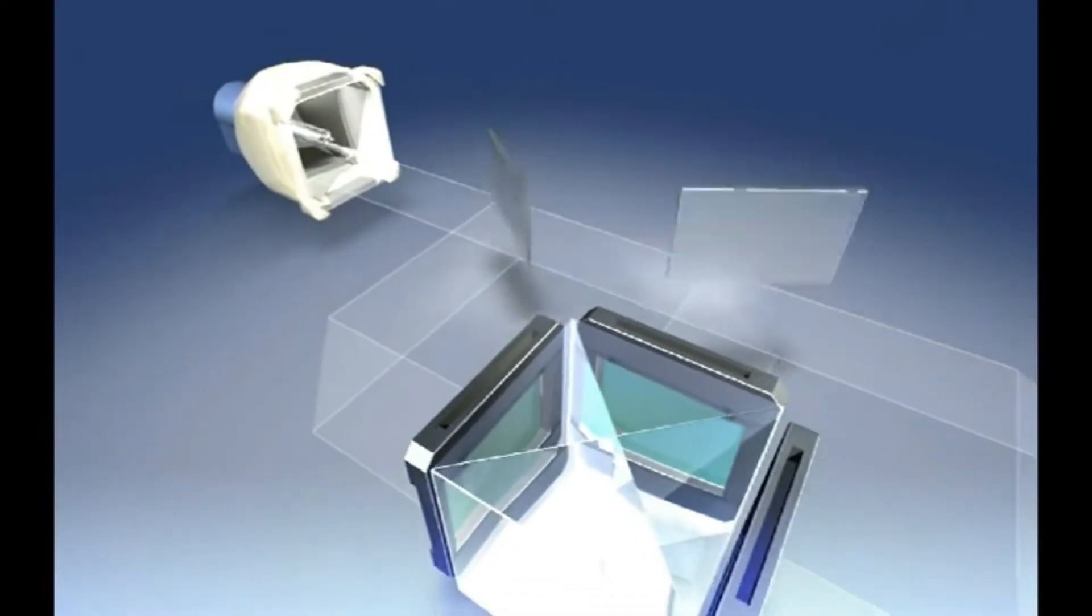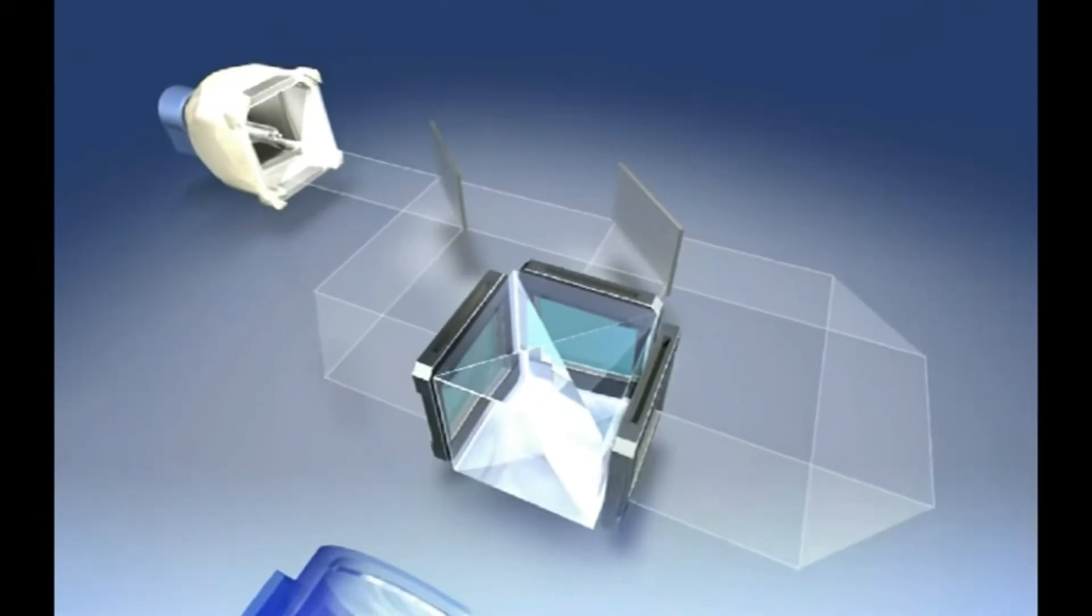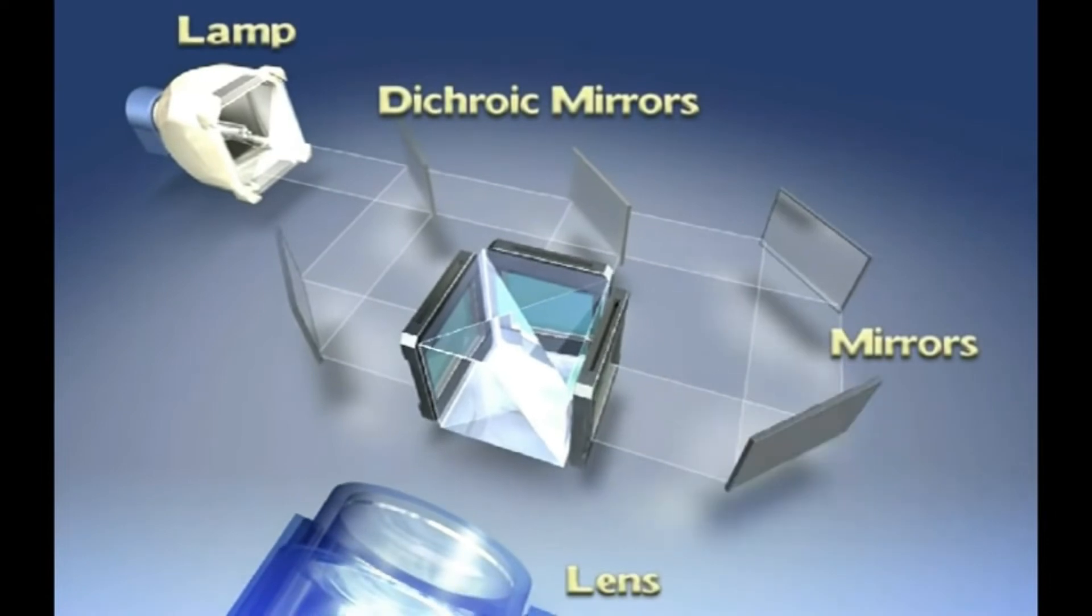Other components are the lamp, the dichroic mirrors, the mirrors, and projection lens. Lamp light is divided by dichroic mirrors into the three primary colors of light: red, green, and blue.